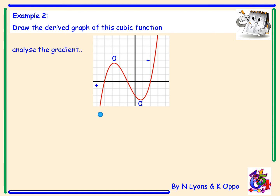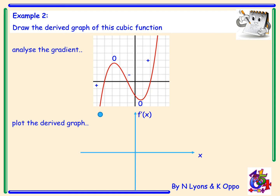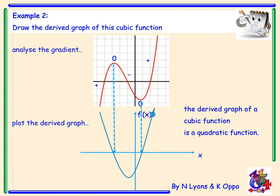So the gradient goes positive, zero, negative, zero, positive. Plotting the derived graph directly underneath, matching the axes and labelling f'(x) and x: the turning points become roots where the derived function cuts the x-axis. Positive means above the x-axis, negative means below — so the curve goes above, cuts the x-axis, below, cuts the x-axis, and above again. That follows the path of a quadratic. The derived graph of a cubic function is a quadratic function, which is expected — differentiating a cubic gives a quadratic.